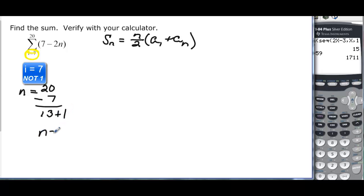We have to find our a_7 because it's the first term that we're working with. So a_7 is going to be 7 minus 14 or negative 7. And then we need to know a_20 because that's the last term that we want to use in our sum. And that's going to be 7 minus 2 times 20, which is 40, which is going to give me negative 33.